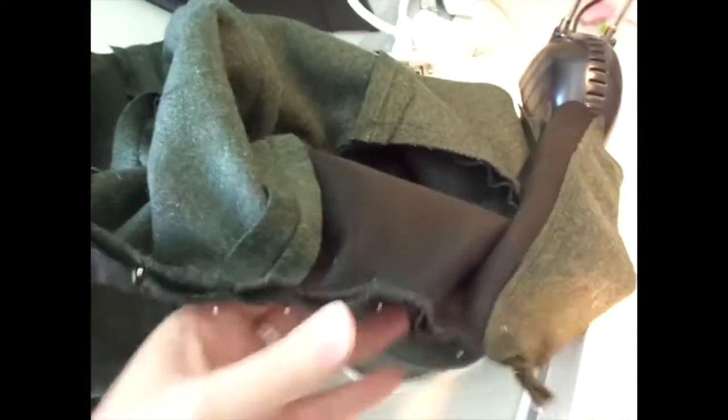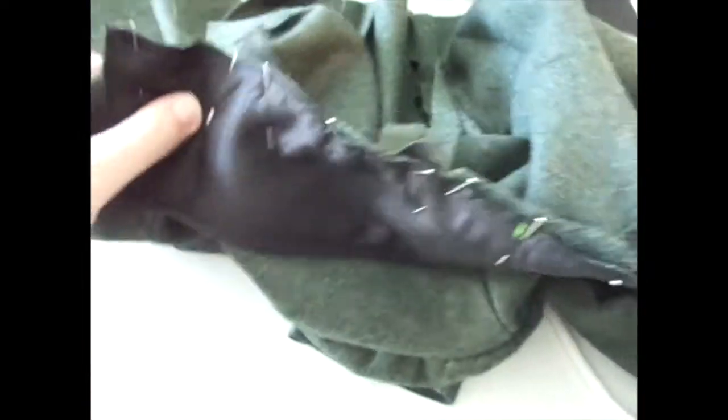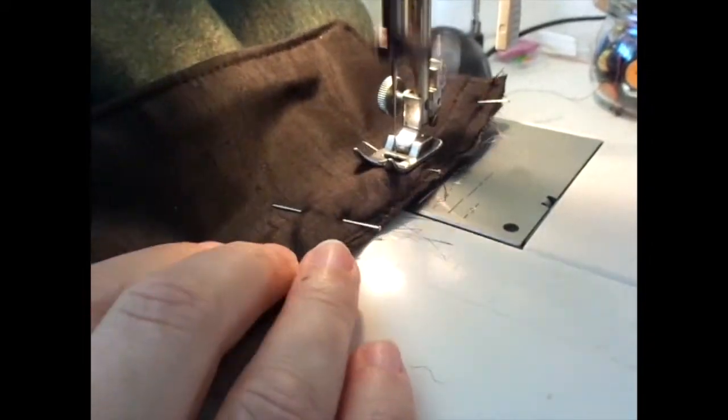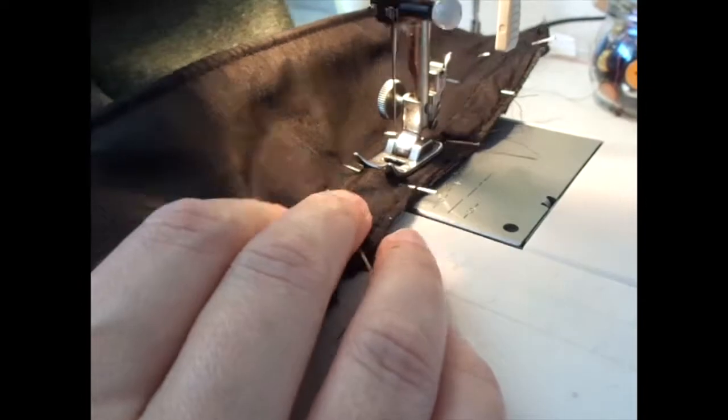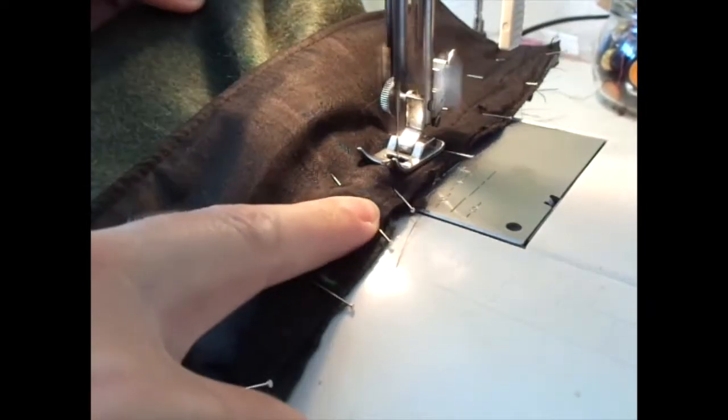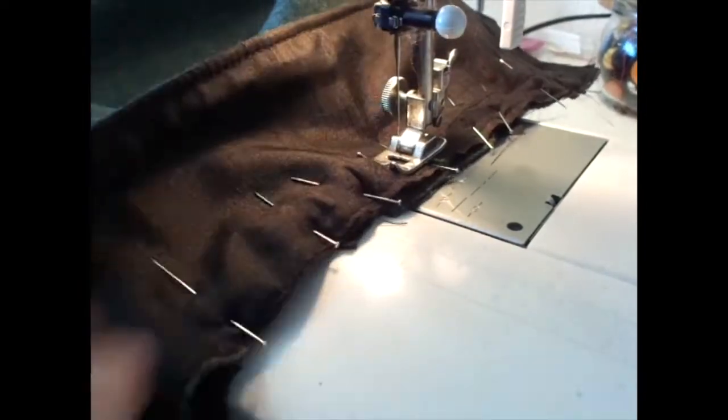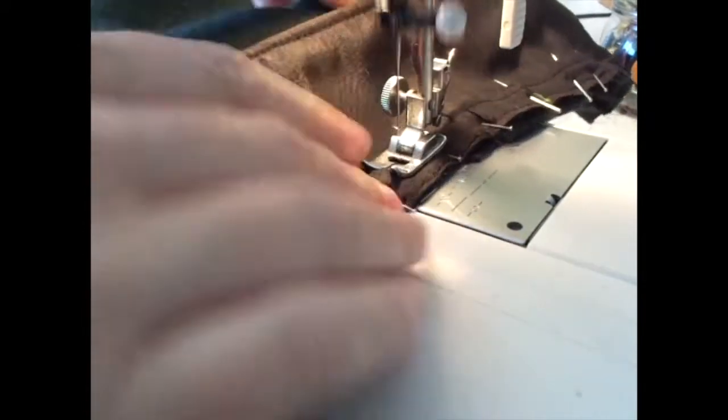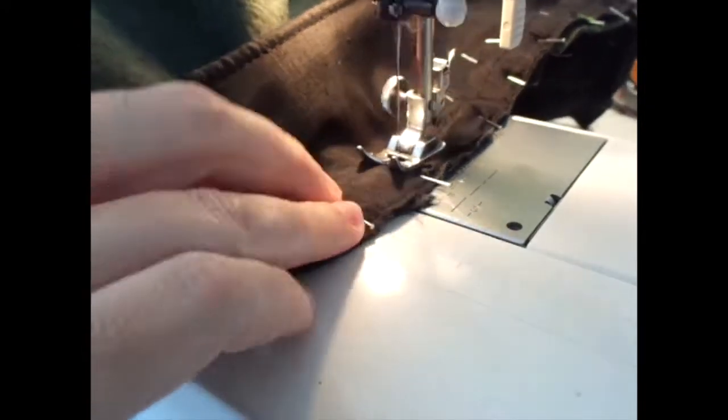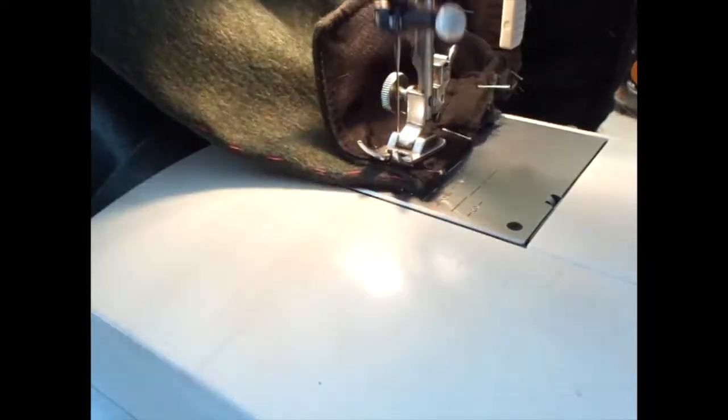And here I'm sewing on the collar. I have sewn on the lining on the collar first, and then wrong side together, and then flipped it. Then made a little stitch, and now I'm just sewing it on the jacket.